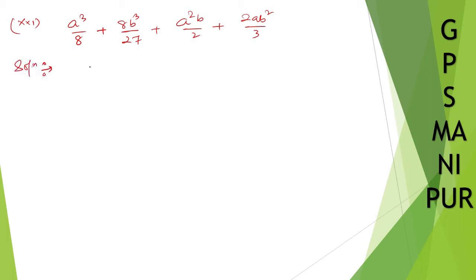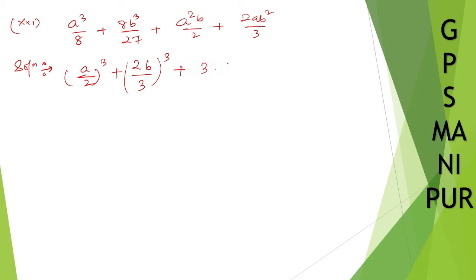Solution: a cube by 8 can be written as (a/2) whole cube. And 8b cube — I can write 8 as 2b and 27 as 3×3×3, so 3×3 is 9 and 3×9 is 27. So we get a cube plus b cube plus thrice a square b, where a square b is 2b by 3.